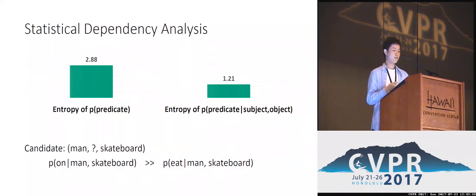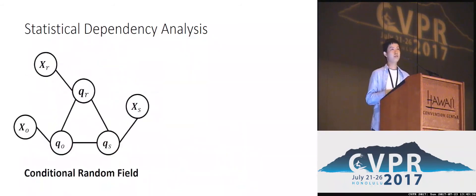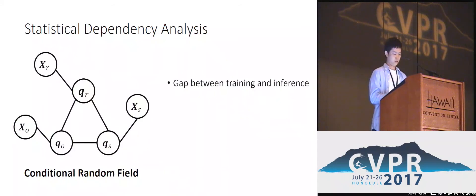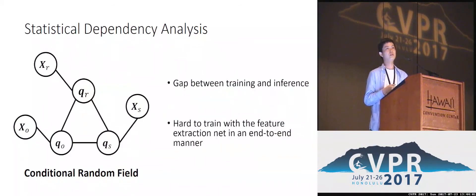Qualitatively, if we have an object pair — man and skateboard — the predicate is more likely to be 'on' rather than 'eat'. The classical method for modeling such statistical dependencies is conditional random fields. However, CRFs have limitations. The first is the gap between training and inference, because in training we optimize the joint distribution, but during inference we care about inference accuracy. The second limitation is that it is often hard to train CRFs together with the feature extraction network in an end-to-end manner.